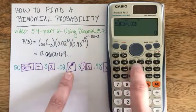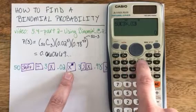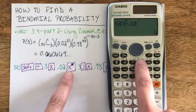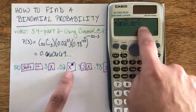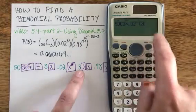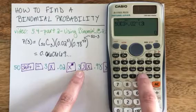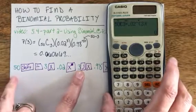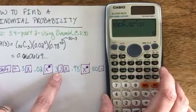To get the third power, I use the x with a box over it button where I can choose any exponent I want, in this case three. And I do need to close off that parentheses set to indicate that 0.02 is only to the third power.